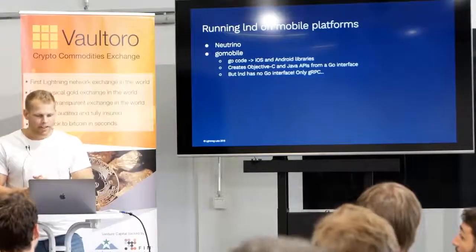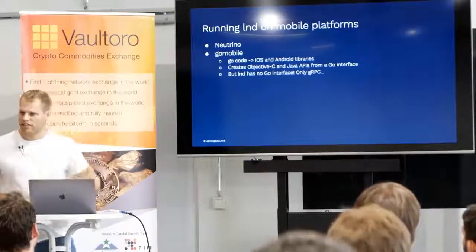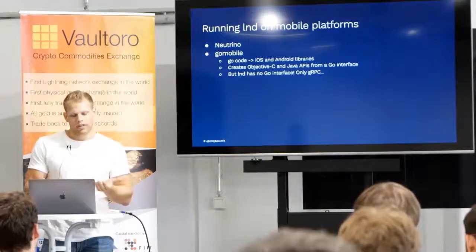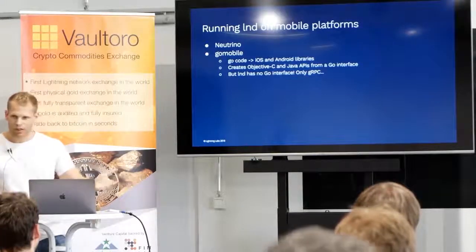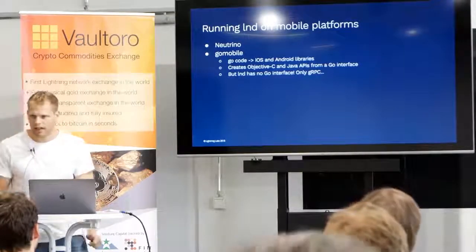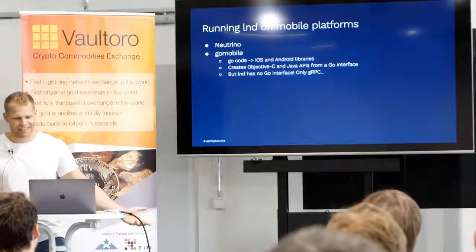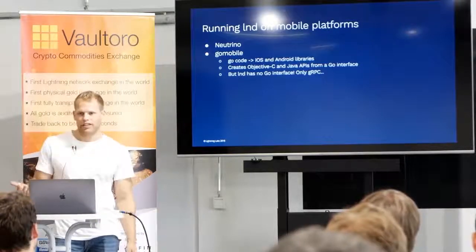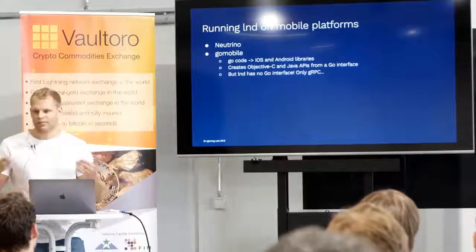So, running LND on mobile. On mobile, since it's a limited device with limited memory and limited bandwidth, it makes sense to use Neutrino instead of a full node. You could use a full node — on Android you have Bitcoin Core, and probably something similar on iOS — but if you have unlimited data and battery, then sure. But I think it makes sense to run Neutrino since this is a light client and you can get started on a regular phone with regular hardware.